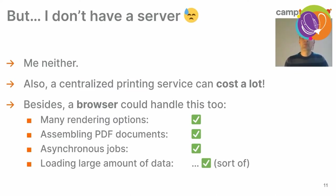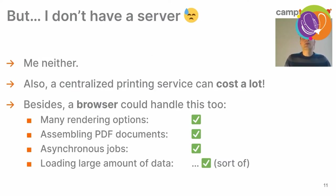When you think about it, a modern browser can do anything you need to print a map. It has many rendering possibilities and several map rendering libraries. It can assemble PDF documents — there are several libraries for that. A browser is capable of handling asynchronous jobs, and you can load large amounts of data in the browser. The only limit is how much data you're willing to download and how much time you have.